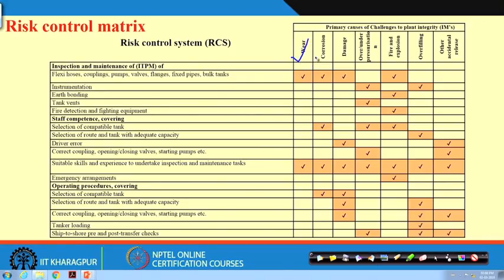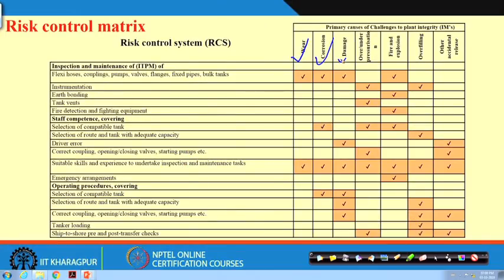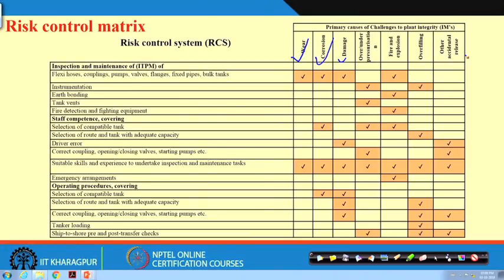The major initiating mechanisms are: wear and corrosion of pipelines, tanks, and road tankers; corrosion of valves, pumps; damage of lines and pumps; overfilling, underfilling; over-pressurization, under-pressurization; fire and explosion in the tank, the pipe, and the road tanker. And other accidental releases — people not closing valves, not closing the tank, stopping or dropping pumps — all these things are the initiating mechanisms.